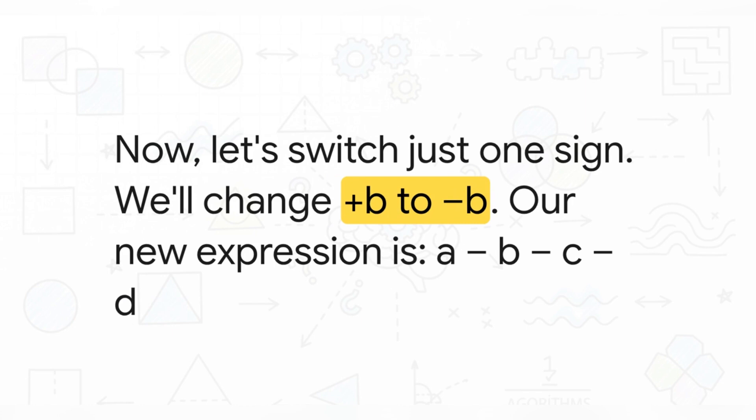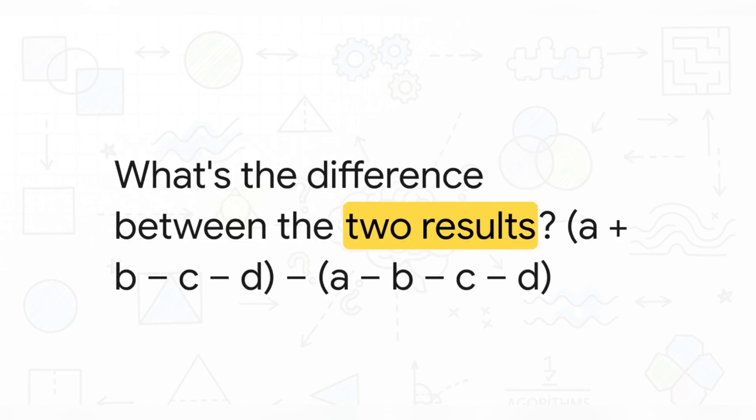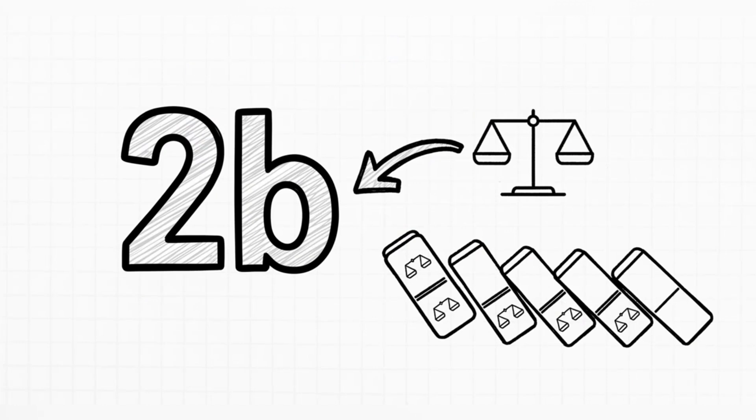All right, now here's where things get really cool. What happens if we change just one of those signs? Let's say we flip the + B to a - B. We'll leave everything else exactly the same. How does that tiny change ripple through and affect the final answer? Well, to figure that out, all we have to do is subtract our new expression from the original one. Yeah, I know it looks a little messy with all the parentheses, but just watch what happens when we clean it up. Boom! The difference is exactly 2B every single time. And what do we know for sure about any number multiplied by 2? It's always even.